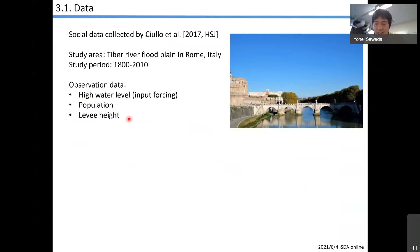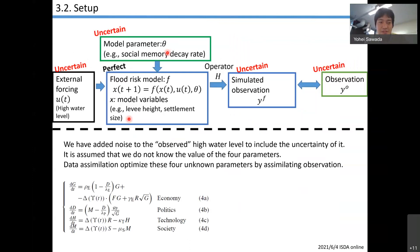This slide shows model setting, problem setting. We assume external forcing is uncertain. We added noise to the observed high water level to mimic the uncertainty of external forcing. I assume uncertainty in model parameters. We assume these four parameters are unknown. We try to jointly estimate the state and parameter by the augmented state vector approach. But the model structure is assumed perfect.